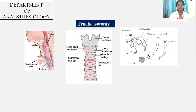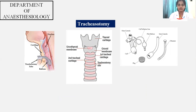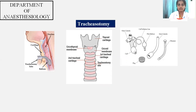Next we have tracheostomy. As seen in the figure, we have different cartilages — the thyroid cartilage, the cricoid cartilage — and in between there is the cricothyroid membrane. Moving on to the tracheal rings, between the second and the third tracheal cartilage is the usual site for tracheostomy, where we insert the tracheostomy tube as shown in the figure.